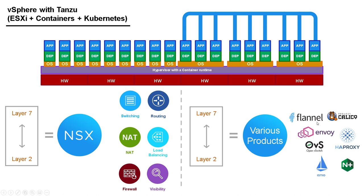It's not always obvious which of these products are going to be the successful ones or which are going to survive. For a long time the most popular were Flannel and Calico. Four years ago a project was started to merge Flannel and Calico into a new project called Canal. Everyone thought that was going to be the successor and the way forward. But about two years ago there was disagreement about how it was going to be done, and Project Canal has been abandoned — we now go back to using Flannel and Calico independently.